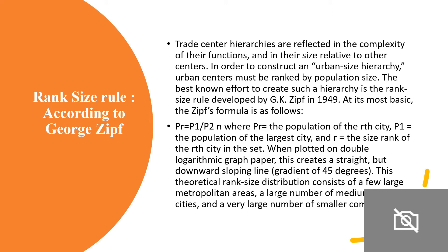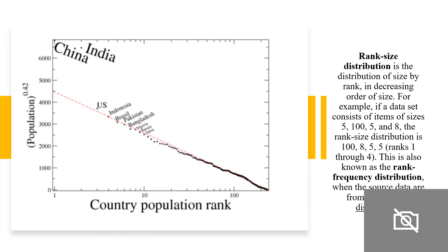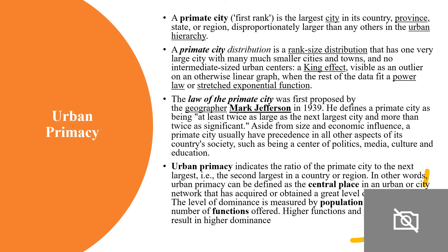Zipf gave a formula for the rank-size rule and developed it in 1949. The rank-size distribution is the distribution of size by rank in decreasing order of size. It is also known as rank-frequency distribution.